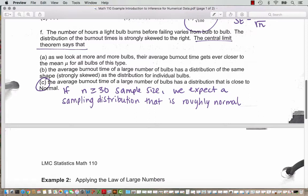The average burnout time of a large number of bulbs has a distribution that is close to normal. And then I put a note here. For quantitative data, if the sample size n is greater than or equal to 30, we expect a sampling distribution that's roughly normal. We saw that when we did the simulations in the previous chapter. So we know that 30 is a good rule of thumb for how big the sample size should be for quantitative data.